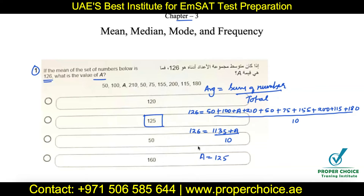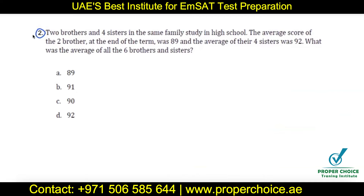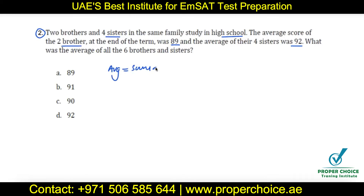Question two: two brothers and four sisters in a family study in a high school. The average score of the two brothers at the end of the term was 89, and the average score of the four sisters was 92. What was the average score of all six brothers and sisters together? This question is about finding the combined average.